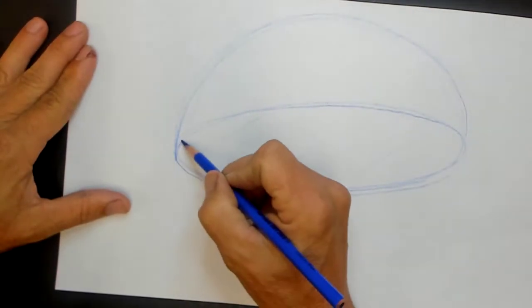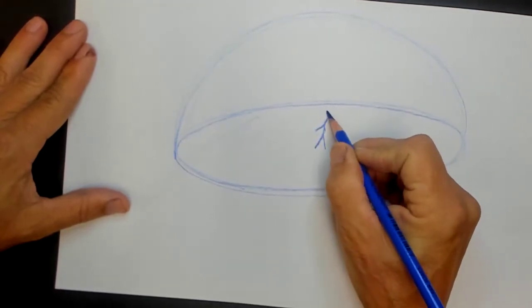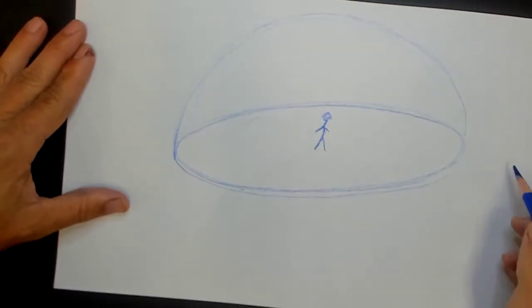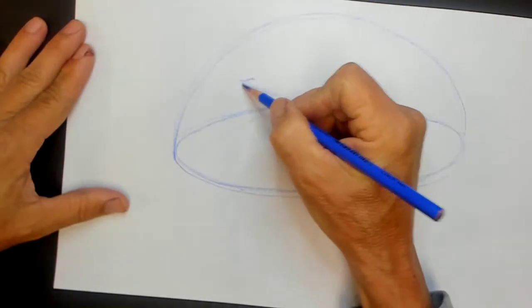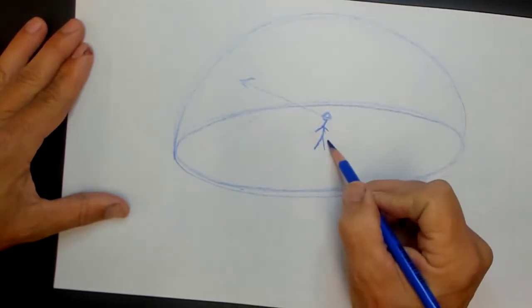The sun is, this is horizon line. And you're standing right there. And you're kind of looking that way. Okay. So we're going to, let's draw, cut this in half. This hemisphere in half.